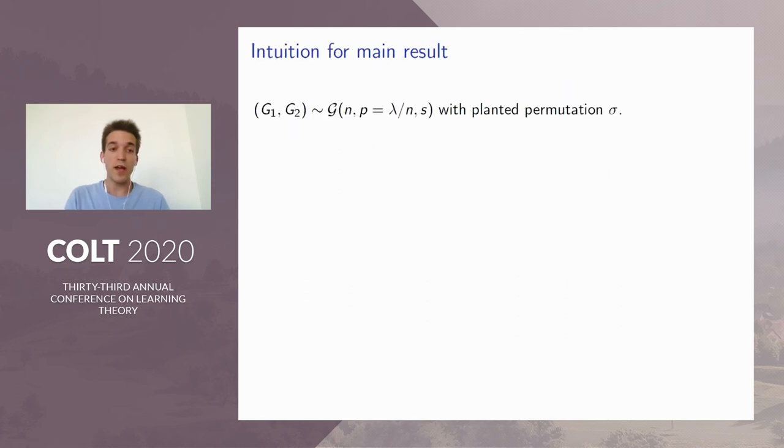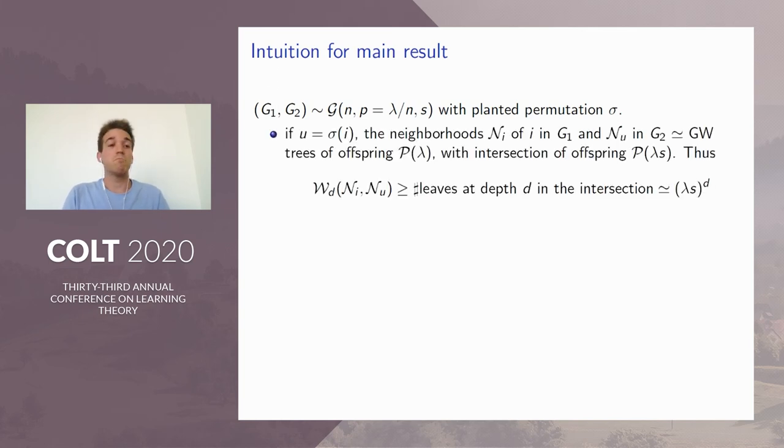This matching weight captures the similarity between trees and has a nice property because we can compute these weights recursively with the following formula. Knowing all weights at depth D minus 1, we can compute the weight at depth D by matching all pairs of subtrees that are rerooted in children i of the root in T and children u of the root in T prime. We want to find an optimal matching of these subtrees to maximize the total weight, which is the sum of the weights at depth D minus 1. Now that we defined these weights, let me give you the intuition for the main results. Remember that we're working with G1 and G2, two random graphs from the correlated Erdős-Rényi model with a planted permutation sigma and p, which is lambda over n, so that we have a constant mean degree.